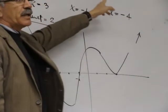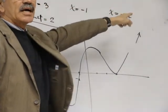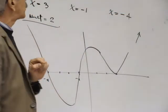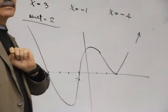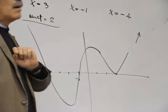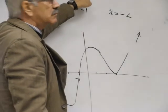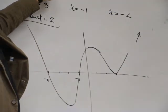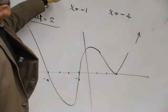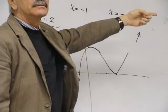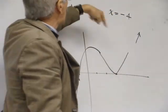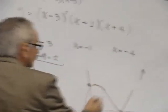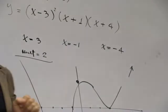If you perform the multiplication, your last term, the constant term, will be the interception with the y-axis, which will be a positive number, obviously. When multiplying (x-3)^2, you get x^2 - 6x + 9. Plus 9 times 1 times 4 is plus 36. This point will be located here. That's it.